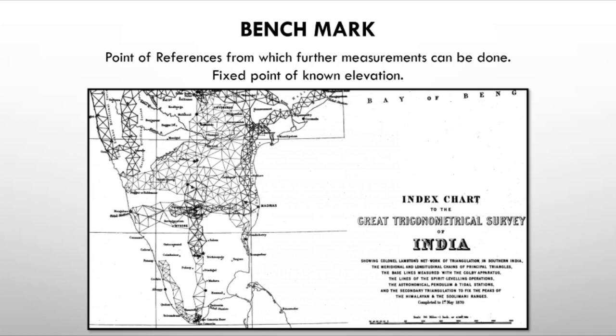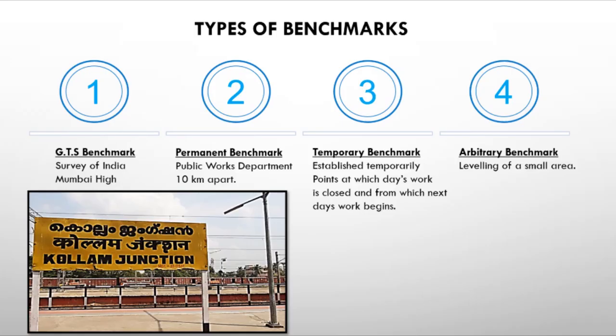We have four types of benchmarks. The first is GTS — Great Trigonometric Survey benchmark. It is a permanent fixed point referenced to Mumbai High mean sea level. All surveys are compared to this. The second is the permanent benchmark, set by government institutions about 10 km apart.